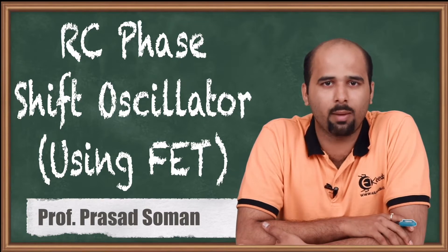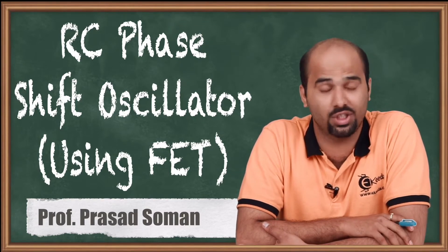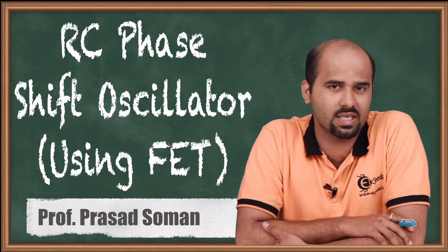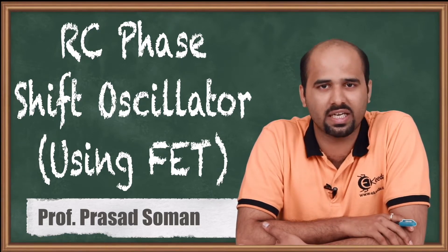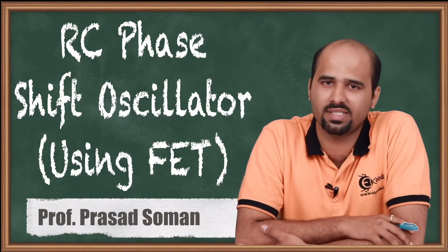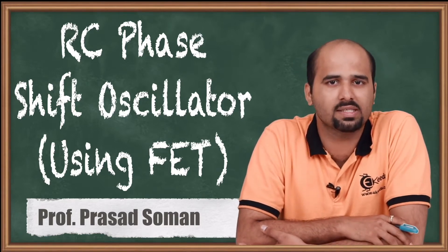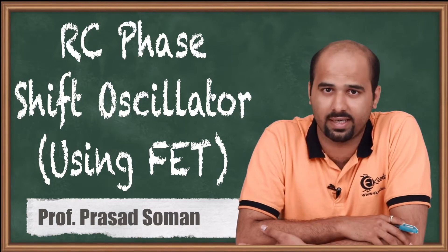In this case, whatever amplification we will be getting is with the JFET transistor. The amplifier is giving 180 degree phase shift and the feedback circuit is giving 180 degree phase shift, so in total we will be getting 360 degree phase shift to fulfill the sustained oscillation criteria, that is Barkhausen criteria.